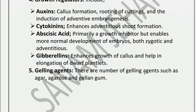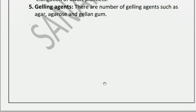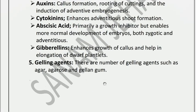The fifth constituent is jelling agents. Jelling agents are used to make the medium solid or semi-solid. The common jelling agents are agar, agarose, and gellan gum. Agar is most commonly used; it is extracted from seaweeds. Agar makes the medium semi-solid, and plant material is placed on it. Agar does not interact with the nutrients in the medium and is a gelling agent used to maintain a semi-solid state.